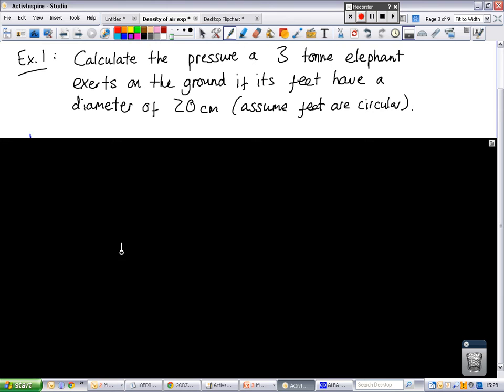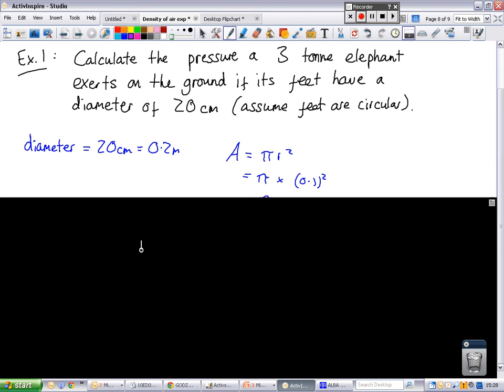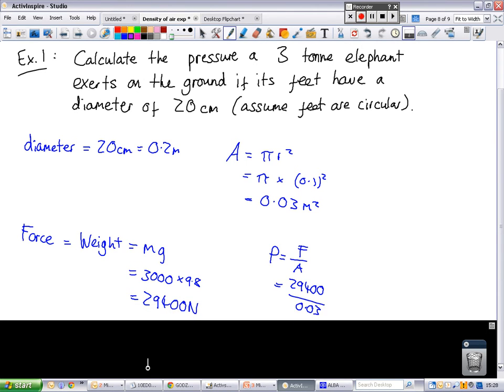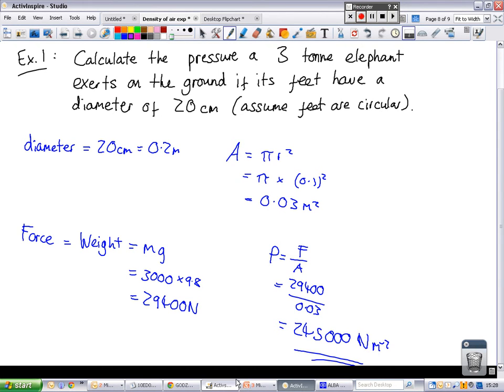So we looked at an example like this. We looked at the old elephant standing on your foot. And calculated the area there, pi R squared. Calculated the force, the force was caused by weight. And then used P equals F over A to give us an answer of 245,000 newtons per metre squared.